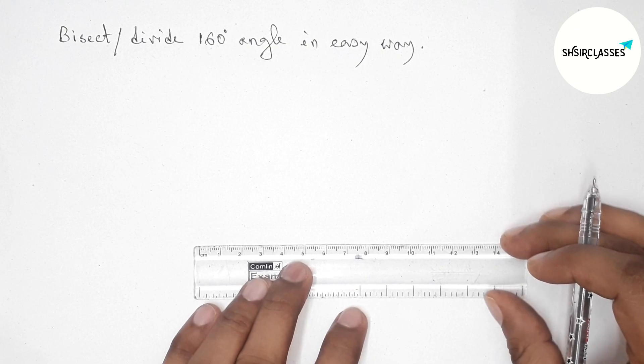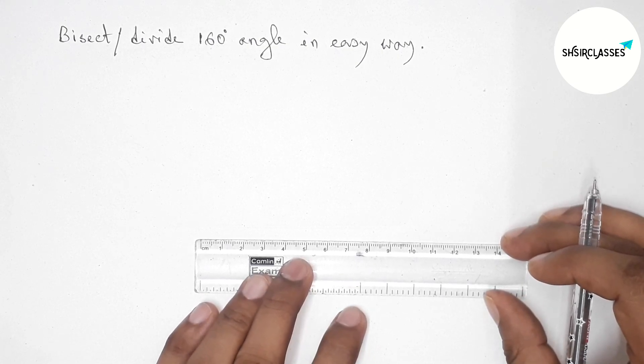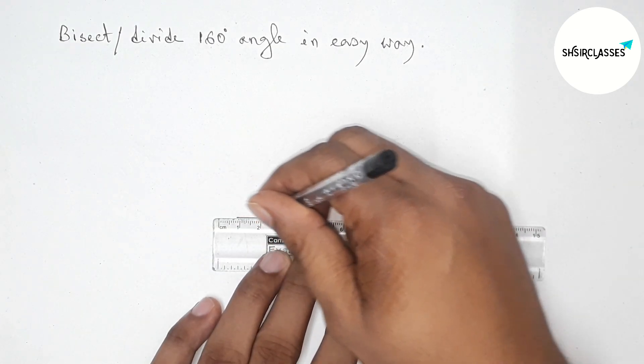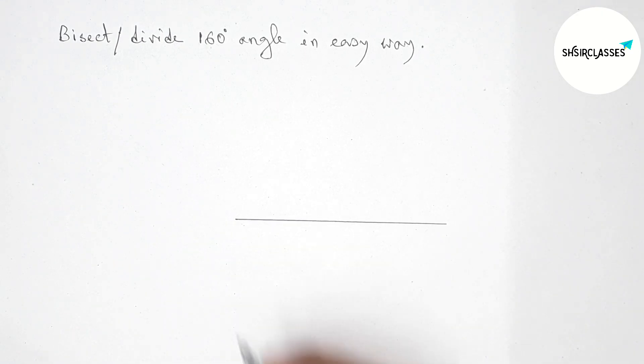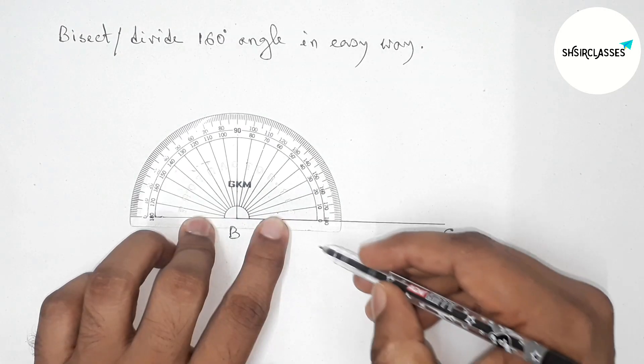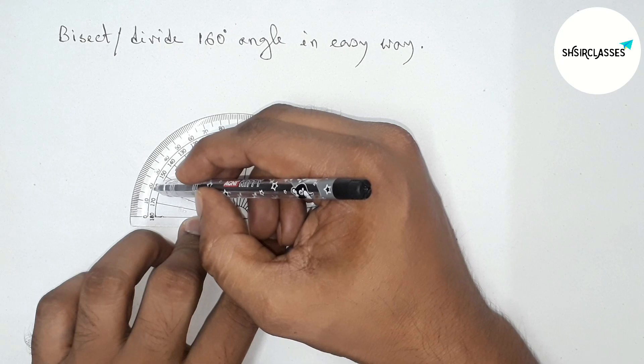First of all, let us draw here a line segment of any length by this way. Next, taking here point B and here C. Now drawing 160 degree angle on the point B with the help of a protractor.